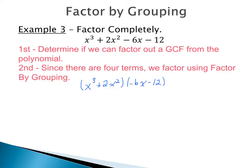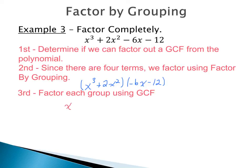We factor each group using GCF, treating them as two separate problems. For the left group, x to the third plus 2x squared, the GCF is x squared. Dividing each term: x to the third divided by x squared gives x (since 3 minus 2 is 1), and 2x squared divided by x squared leaves 2. So the left group factors as x squared times the quantity x plus 2.